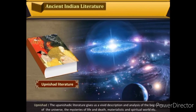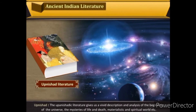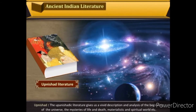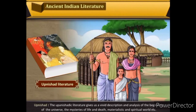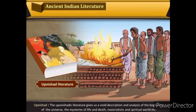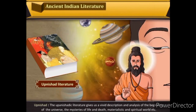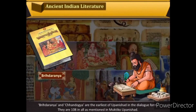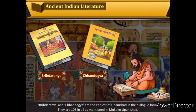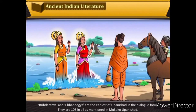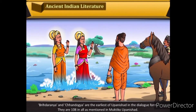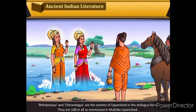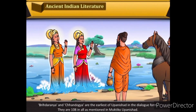The Upanishadic literature gives a vivid description and analysis of the beginning of the universe, the mysteries of life and death, and the materialistic and spiritual world. Brhadaranyaka and Chandogya are the earliest Upanishads in dialogue form. They are 108 in all, as mentioned in the Muktika Upanishad.